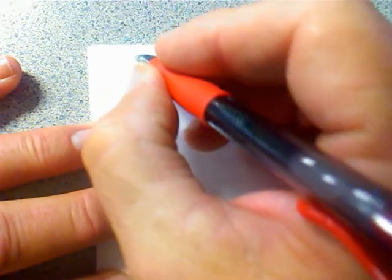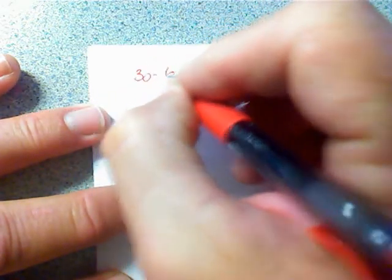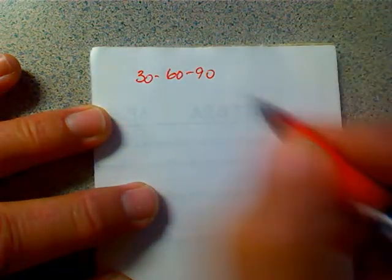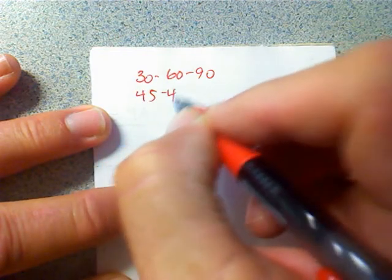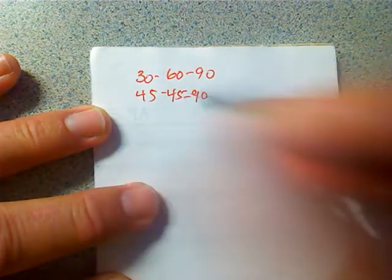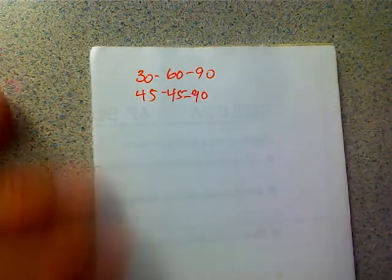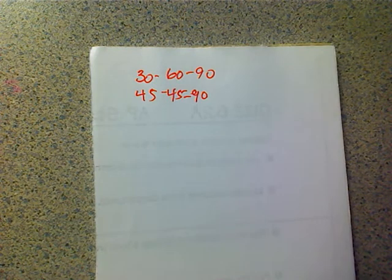I'd like to give you a little help on how to find the sides of a couple of special triangles, namely a 30-60-90 right triangle and a 45-45-90 right triangle. And sometimes these get confusing for students.